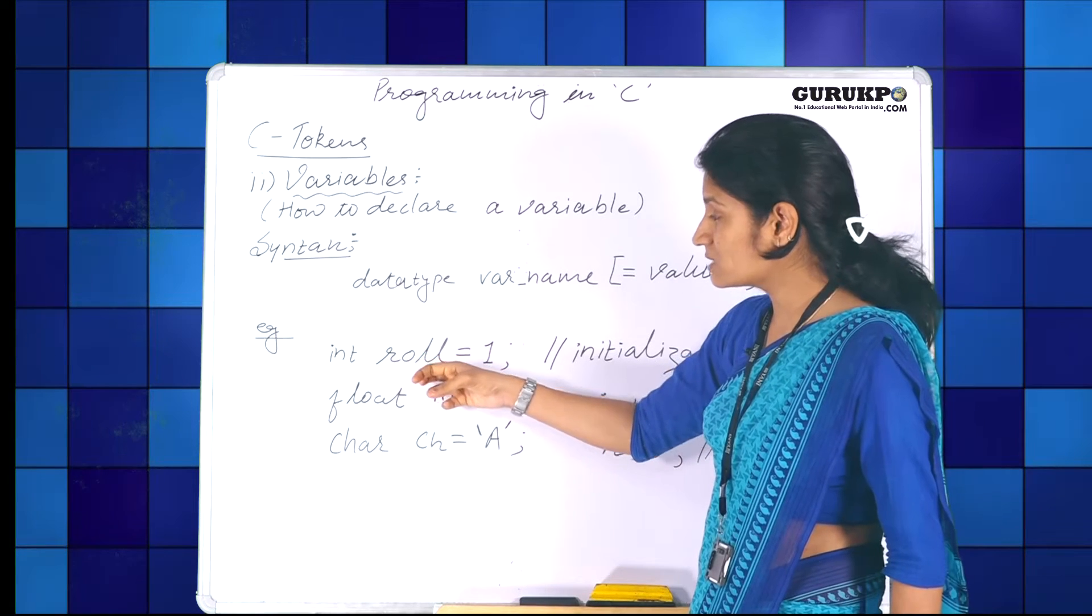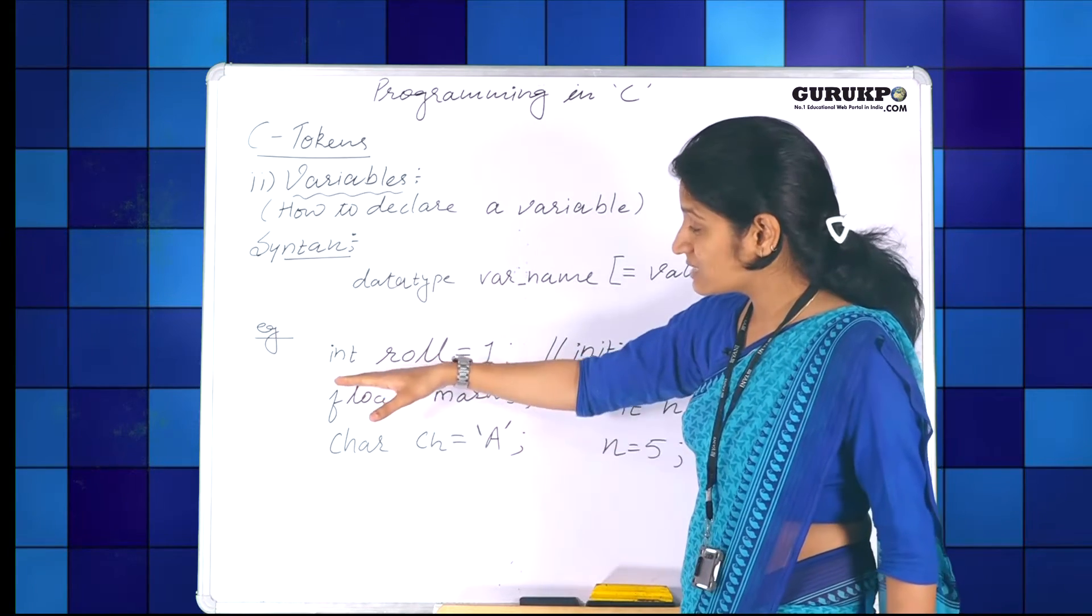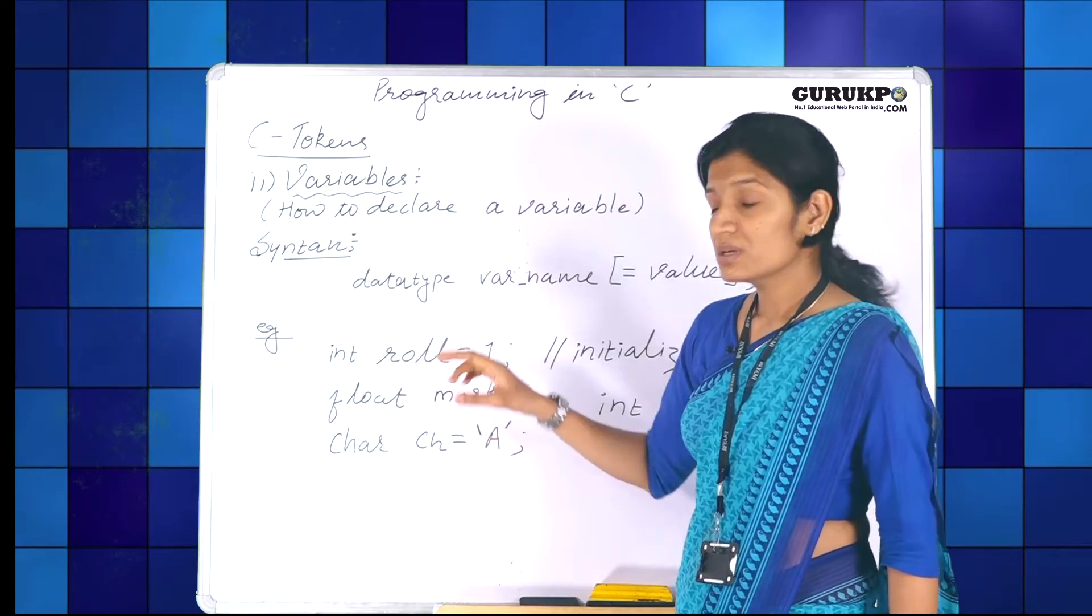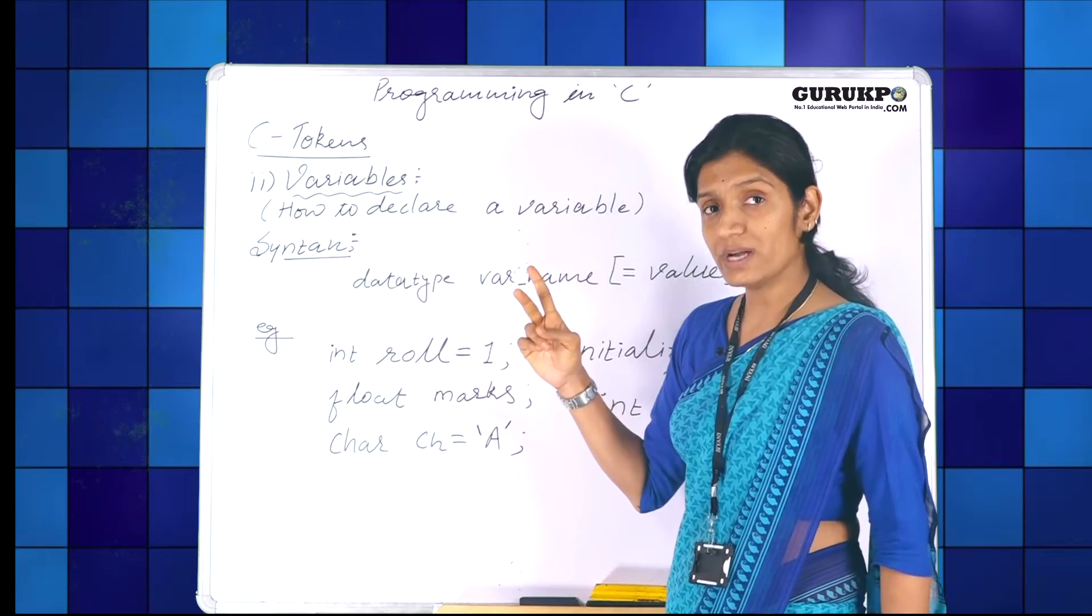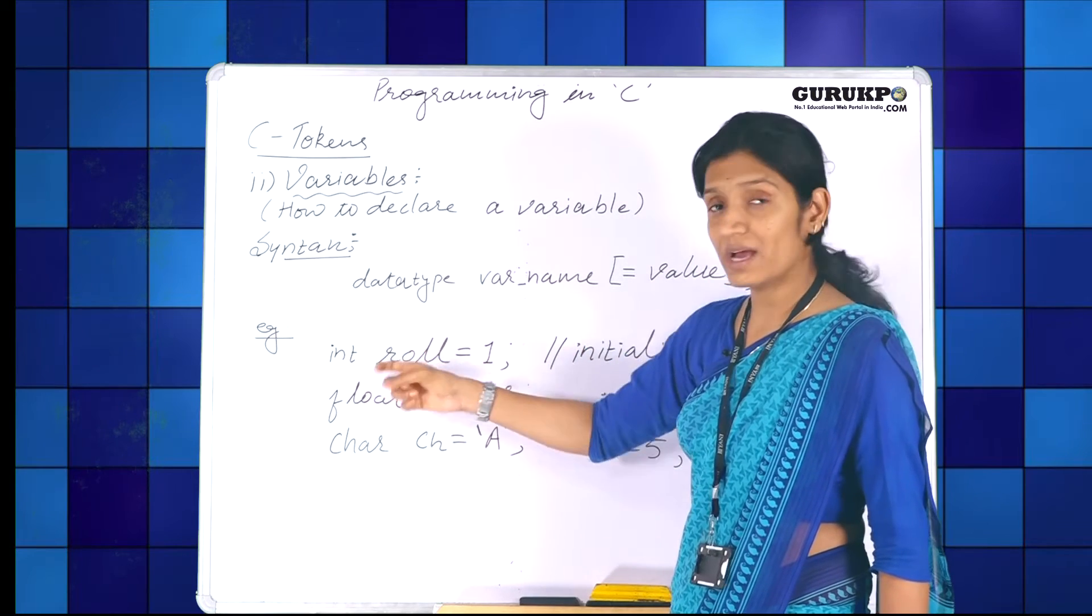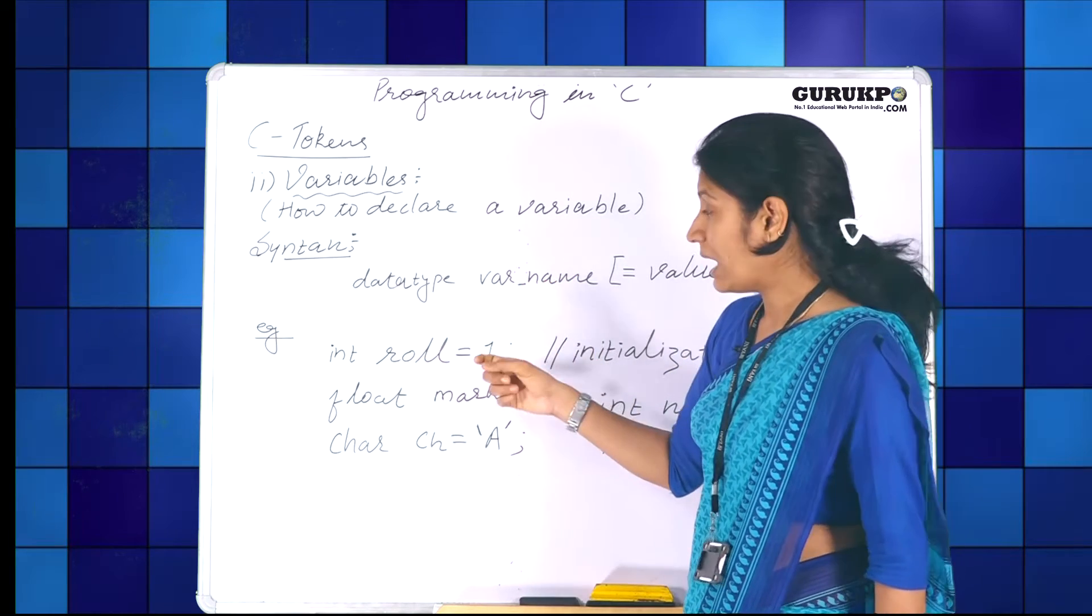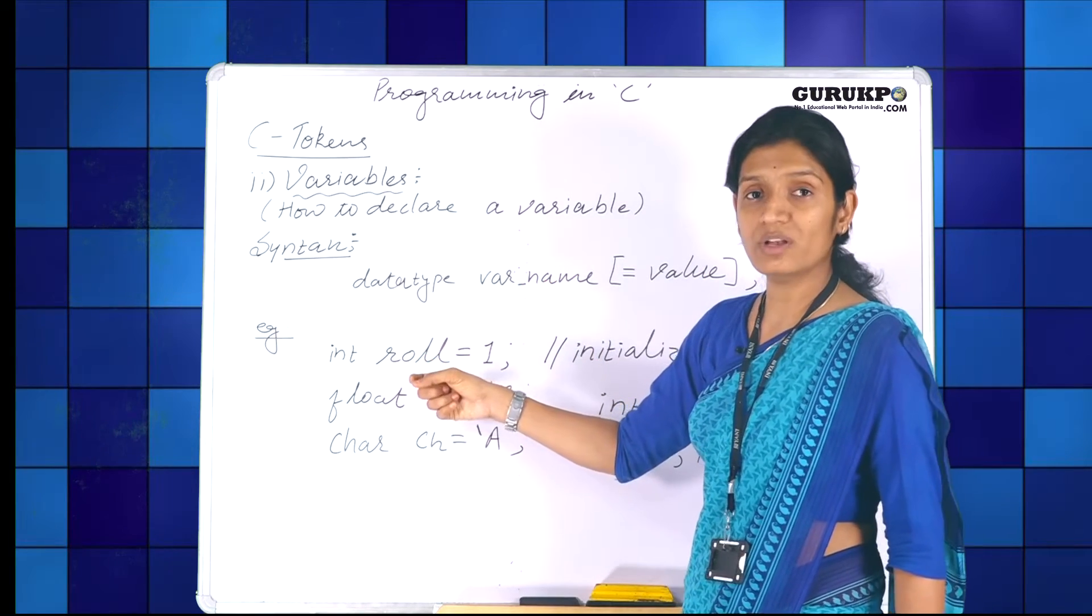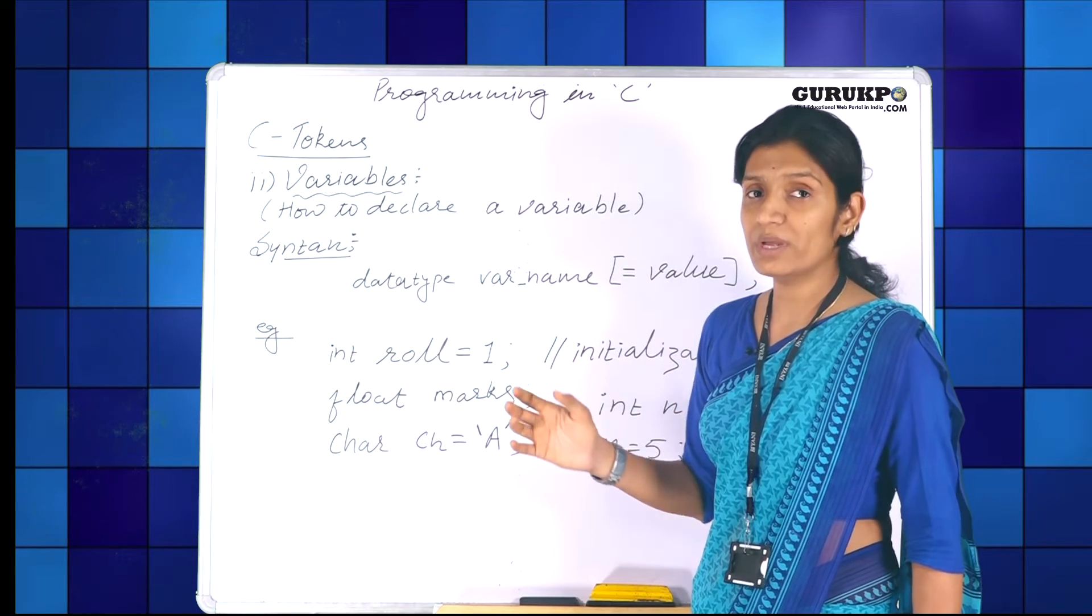I am assigning this variable a value 1. What this statement will do? This statement will reserve 2 bytes for role in the memory. Why 2 bytes? Because we are taking the size of integer as 2 bytes. So role will take 2 bytes in the memory and 1 will be assigned to the value. Whenever we are going to use this variable in our program, the value will be 1.